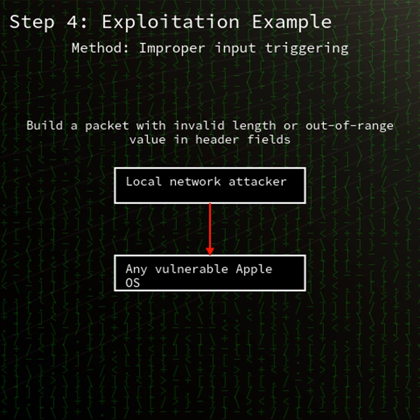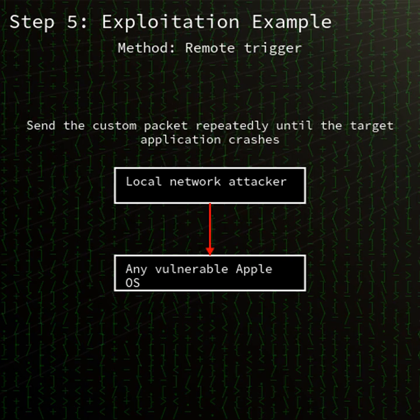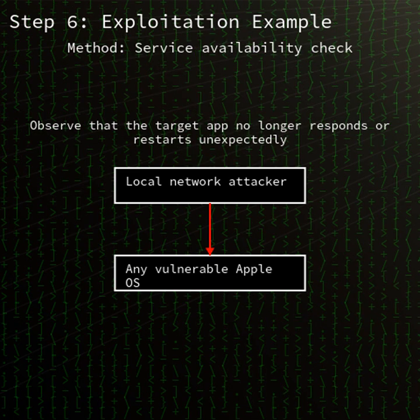CVE-2025-2425-1 is classified as a denial of service vulnerability. It allows an attacker on the same local network segment to send specially crafted network traffic that causes targeted applications to crash unexpectedly.